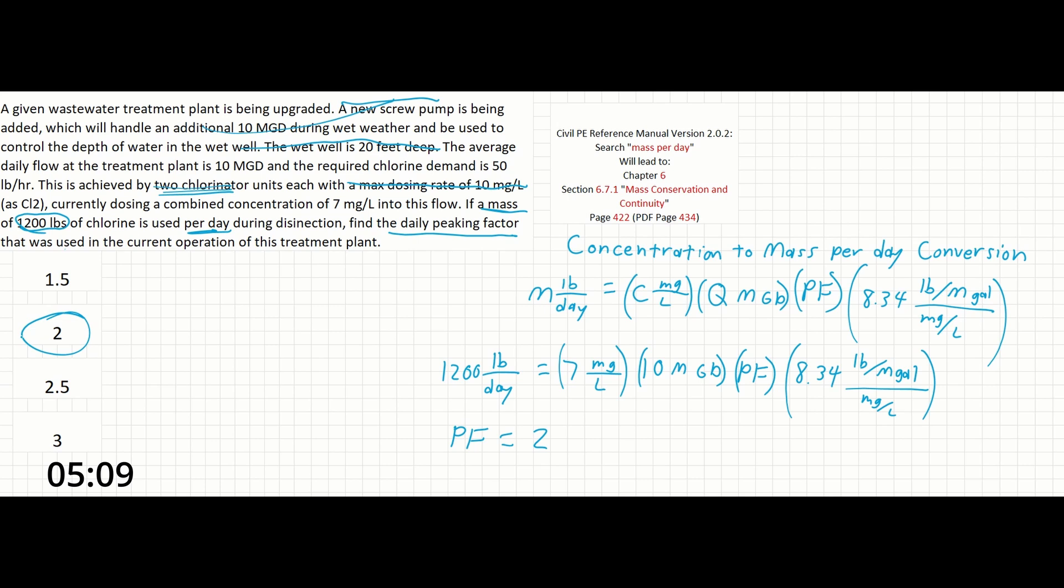So this problem is intentionally meant to take a while to read and requires you to pick out exactly what information is needed to solve the problem. If you can get through that part, all this is is a simple conversion of pounds per day to milligrams per liter at a given flow rate with a known conversion factor. And that's it.